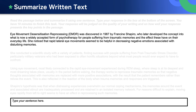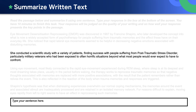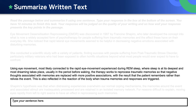She noticed that rapid lateral eye movements seem to be helpful in decreasing negative emotions associated with disturbing memories. She conducted a scientific study with a variety of patients, finding success with people suffering from post-traumatic stress disorder, particularly military veterans who had been exposed to often horrific situations beyond what most people would ever expect to have to confront. Using eye movement, most likely connected to the rapid eye movement experienced during REM sleep, where sleep is at its deepest and most dreaming takes place, usually in the period before waking.